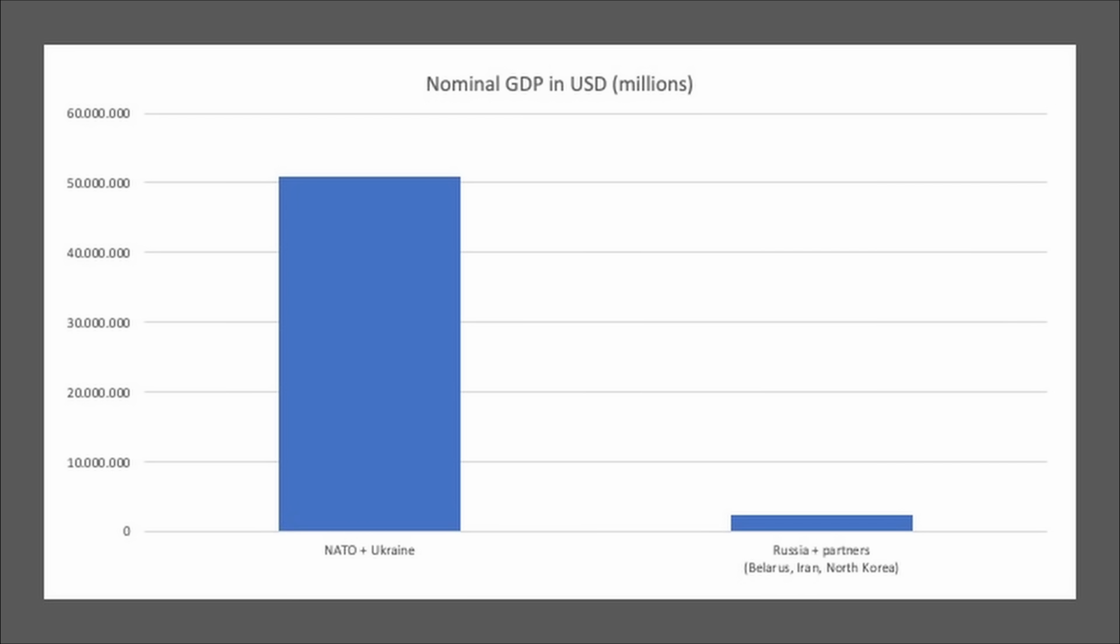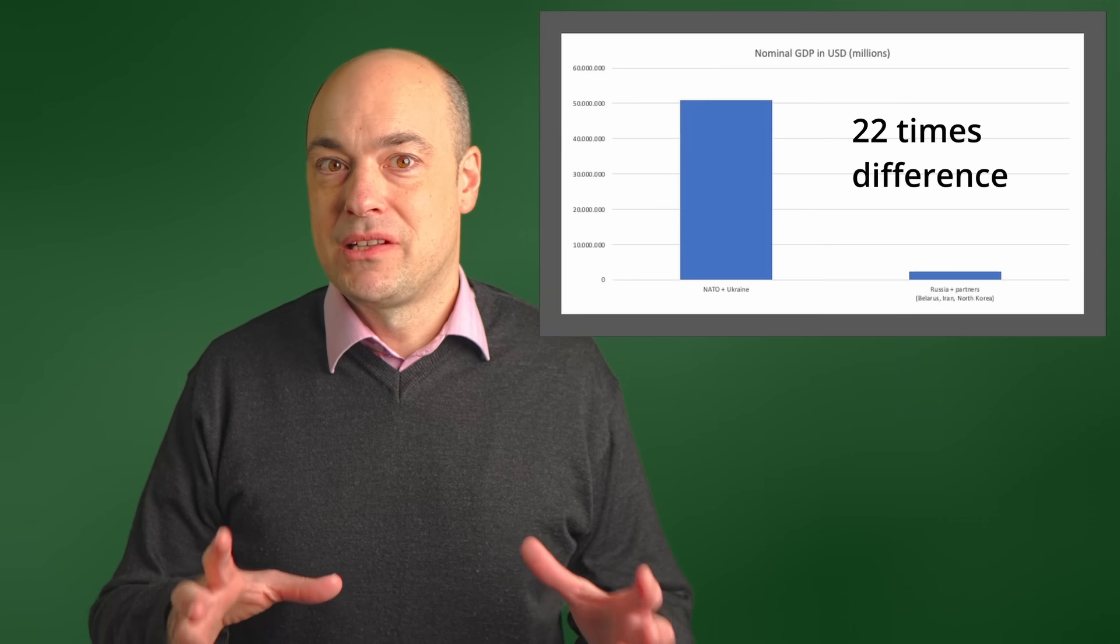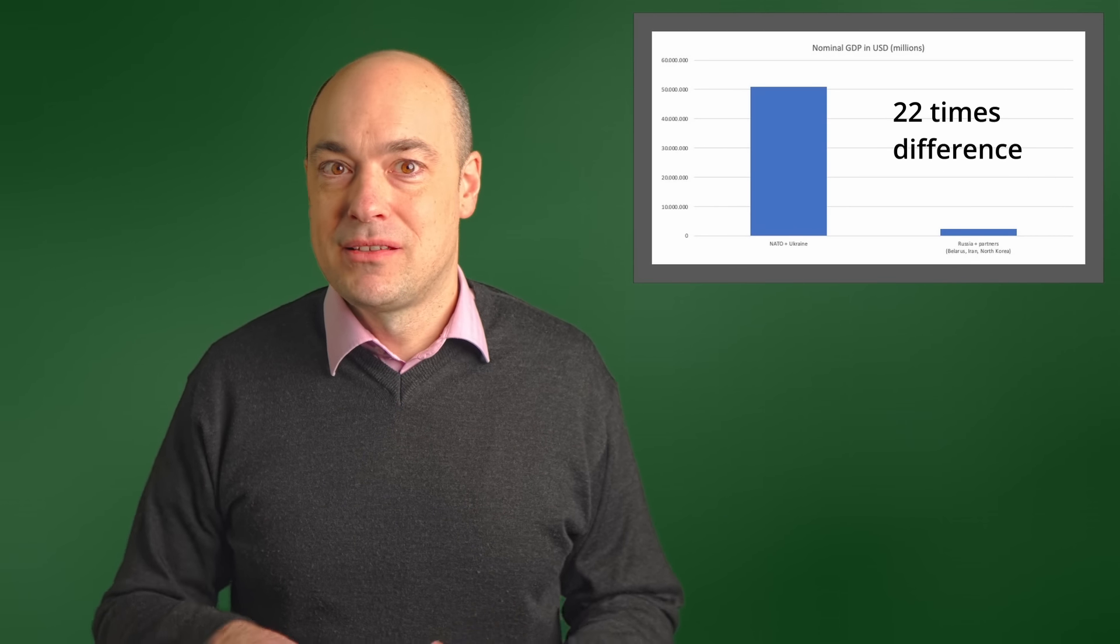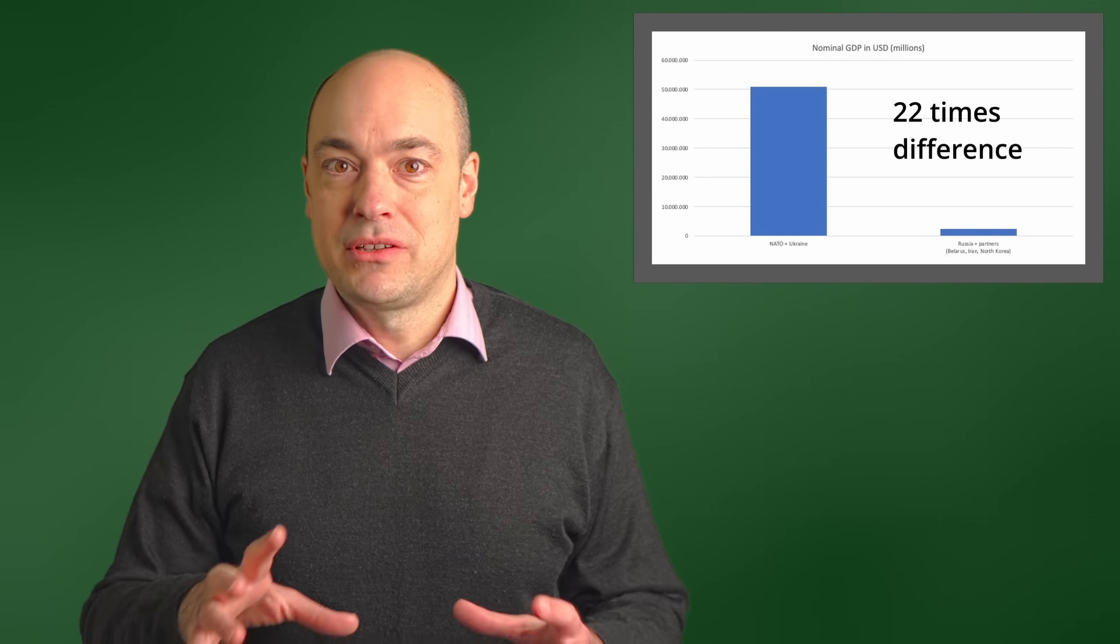It's pretty close to the numbers that Jake Bro mentioned in his video. His numbers was that the Western GDP was 21 times bigger. In my calculation, it's actually 22 times bigger. NATO plus Ukraine have 22 times more production capacity than Russia, Iran, North Korea, and Belarus. So this is just to give a broad idea about the relative production capacity on the two sides. The goal is not to be super exact about it.